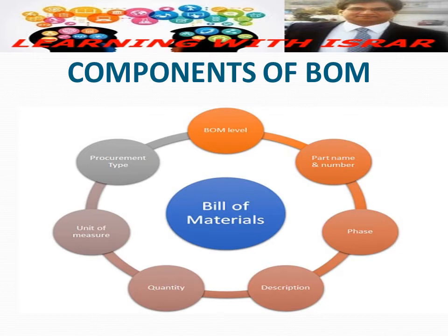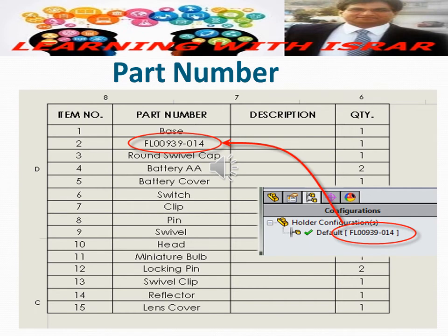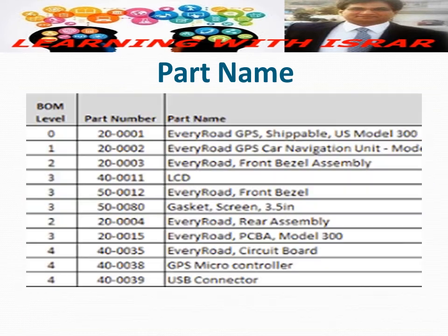The components of a Bill of Material include: part number, part name, phase, description, quantity, unit of measure, and procurement type. You assign a part number to each part or assembly in order to reference and identify parts quickly. It is common for manufacturers to choose either an intelligent or non-intelligent parts numbering scheme. Make sure you avoid creating multiple part numbers for the same part. Also record the unique name of each part or assembly to help identify it more easily.